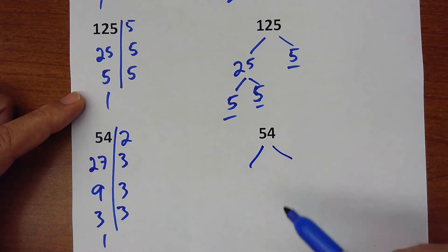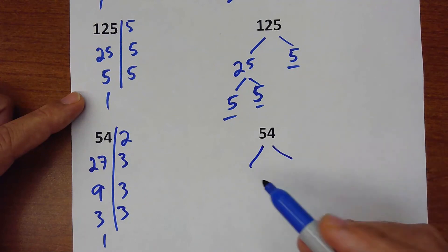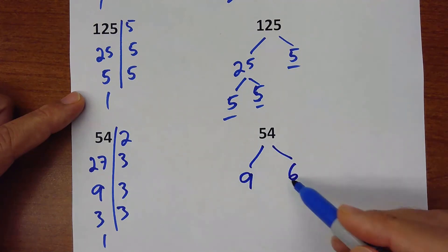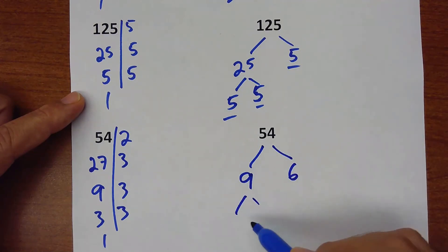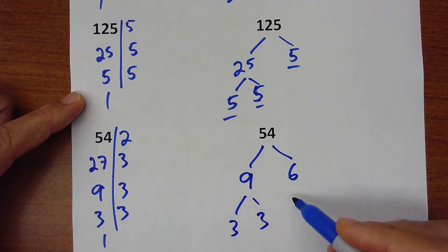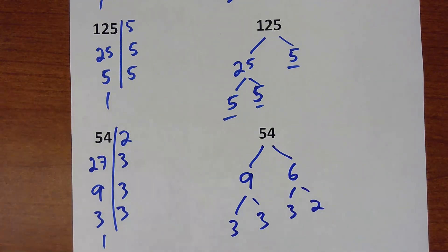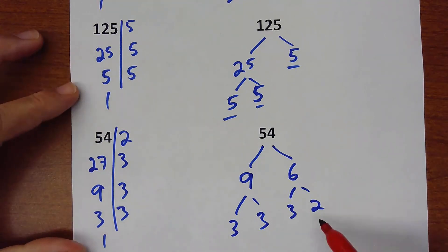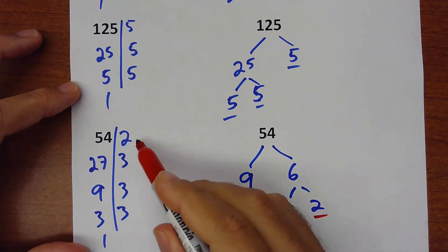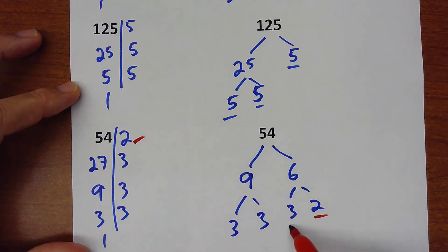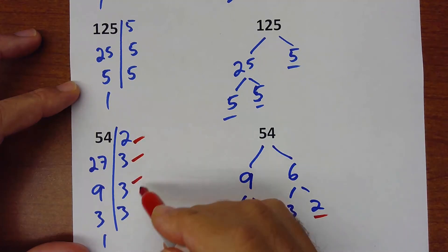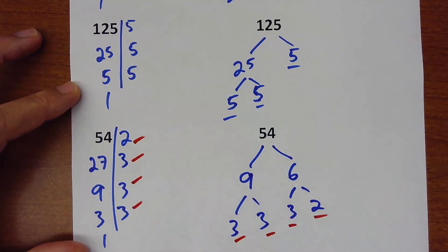Using the factor tree: 54 is 9 times 6. The 9 is 3 times 3, and the 6 is 3 times 2. So we have the same prime factors: 2, 3, 3, 3.